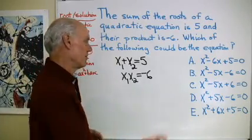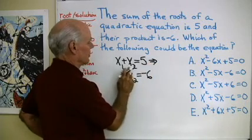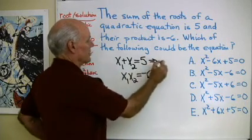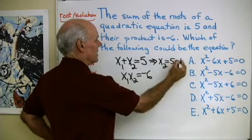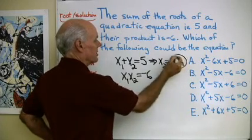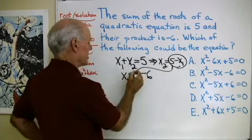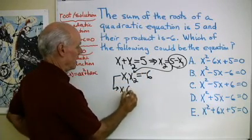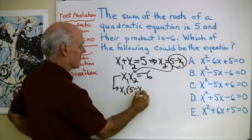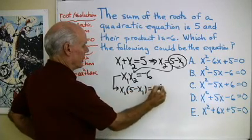It's not a linear system, but I can still solve it pretty easily here. I'll solve this for x2. x2 is going to be equal to 5 minus x1. I'll take this expression for x2 and substitute it back in here and get x1 times 5 minus x1 is equal to negative 6.